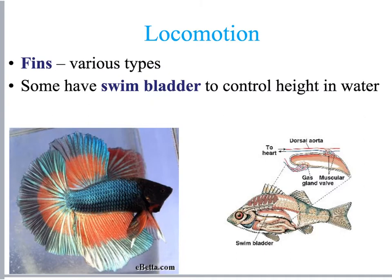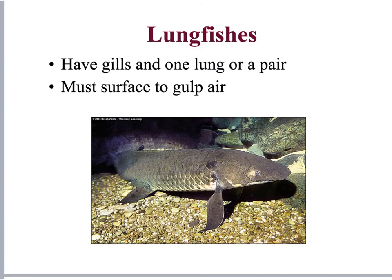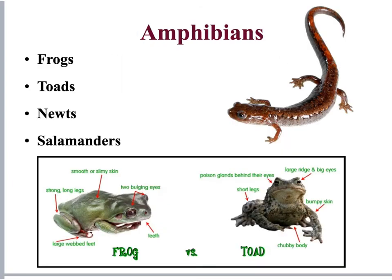Lungfish are very unique in that they have both gills and a lung that helps them come to the surface and gulp air. It is hypothesized that a type of fish similar to this was ancestrally the intermediary between fish and amphibians, which fully have lungs and can breathe on land. Quite often people confuse frogs and toads in particular, but there are distinguishing characteristics that separate them. Newts and salamanders are also very similar but have their own defining characteristics.